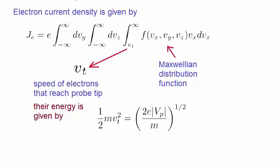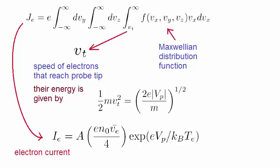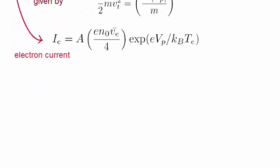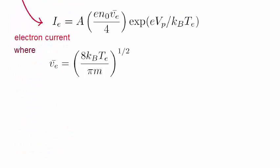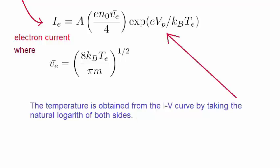We finally obtain an expression for the electron current given by this, where the average electron speed, VE, has been defined in previous lectures. We then obtain the electron temperature from the IV curve by taking the natural logarithm of both sides.